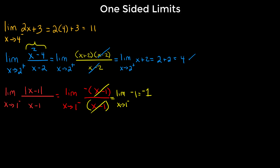Lastly, let's look at an example that requires our knowledge of numbers. We're taking the limit as x approaches 5 from the right of 7x / (x - 5). This function is not continuous at x = 5 because that causes a zero in the denominator. We can't simplify anything, and it's not an absolute value function, so we're forced to use our knowledge of numbers.